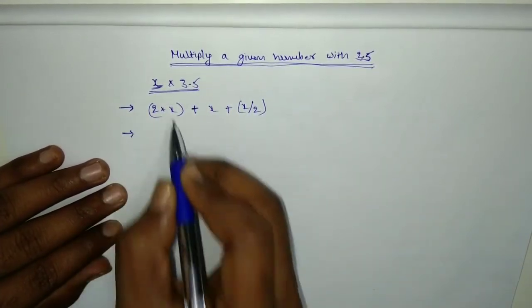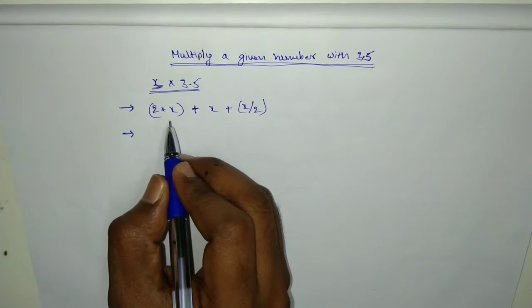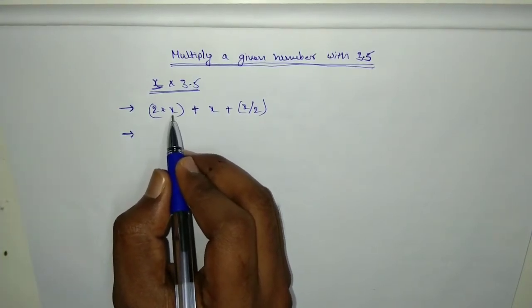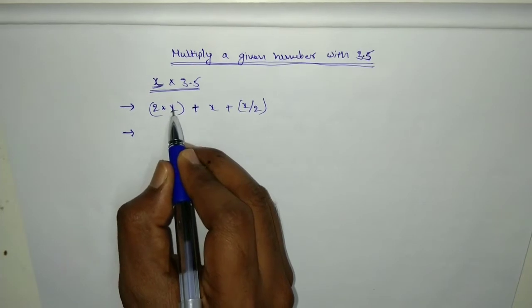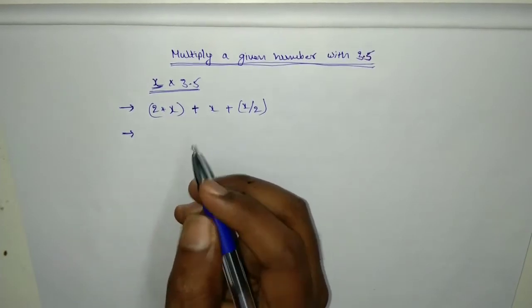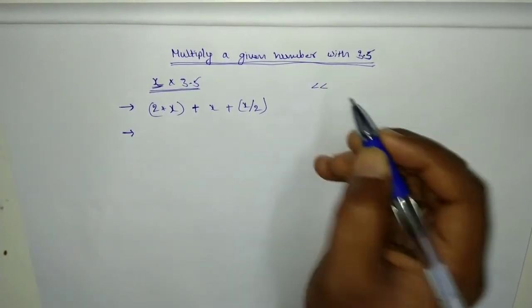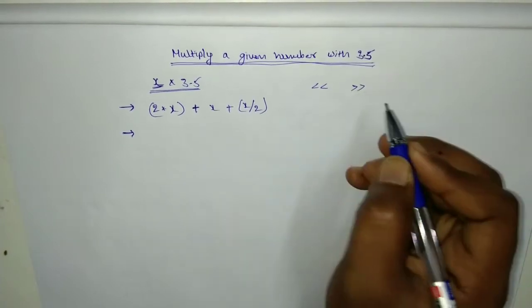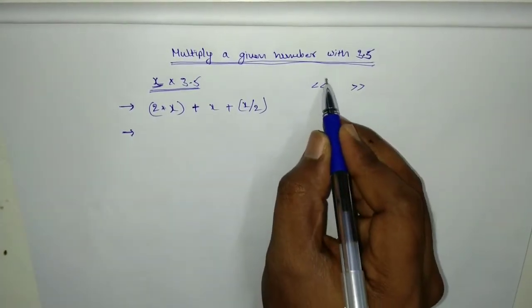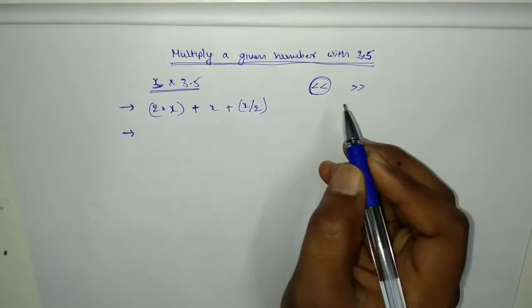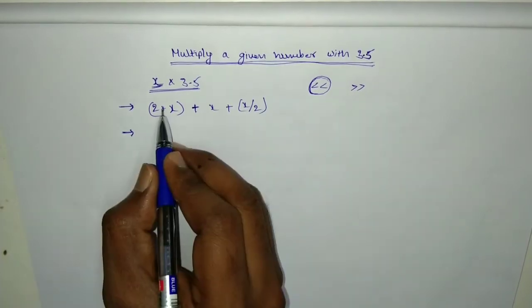Now what we have to do to double the number x: there is a left shift operator and right shift operators in Java. Using the left shift operator we can double the number. So if you do x left shift one time, then x will become 2x.